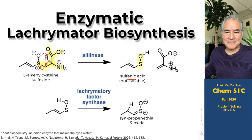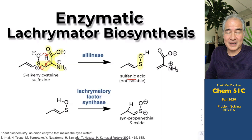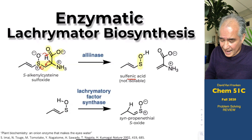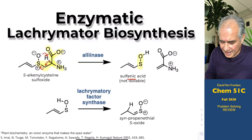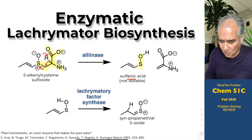In the brief time that this sulfenic acid is floating around in the cell, before it has a chance to fall apart or react with other nucleophiles, there's an enzyme inside onion cells called lacrimatory factor synthase. This enzyme catalyzes a tautomerization — a proton moving from one part of the structure to another. Without it, this would be slow relative to the degradation of the sulfenic acid. But the synthase enzyme very rapidly transfers this proton to the carbon, generating this powerful lacrimator.